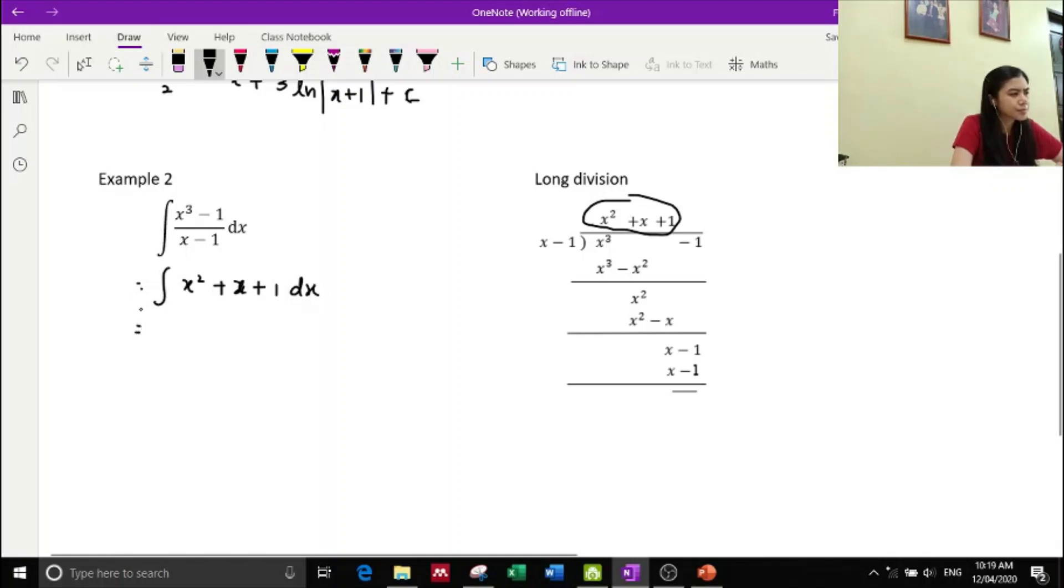So now, this is very simple to integrate. We will have the answer of x cubed over three, and we have x squared over two, and then we have the x, and then we have plus C. So this is the answer for example two.